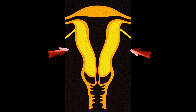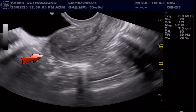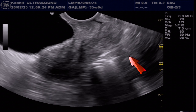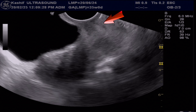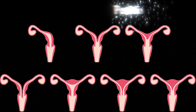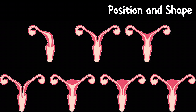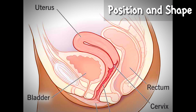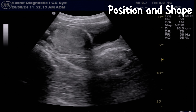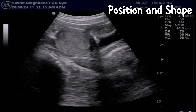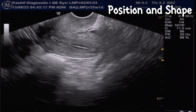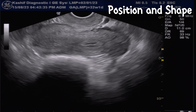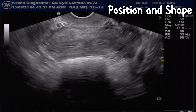The myometrium is the muscular wall of the uterus. It has a fundus and body; the lower end is the cervix, which is in continuity with the vaginal cavity. The position and shape of the uterus can be detected by ultrasound. The normal position is anteverted, where the uterus tilts forward at the cervix and points towards the abdomen.